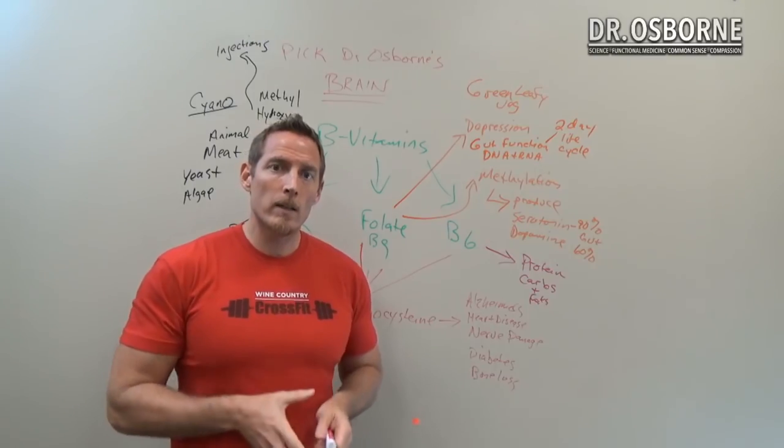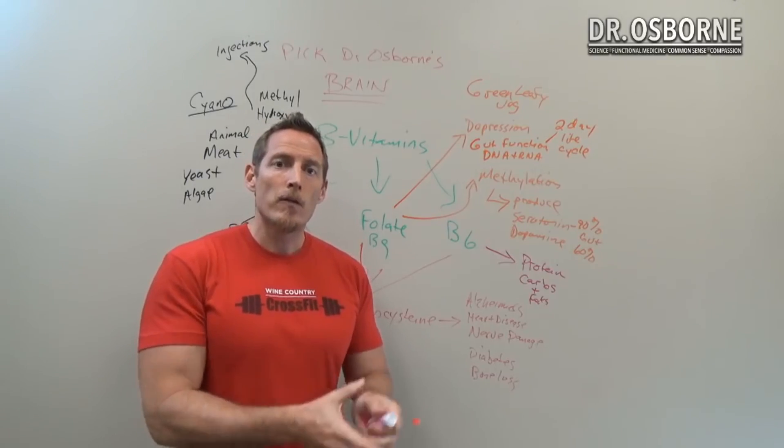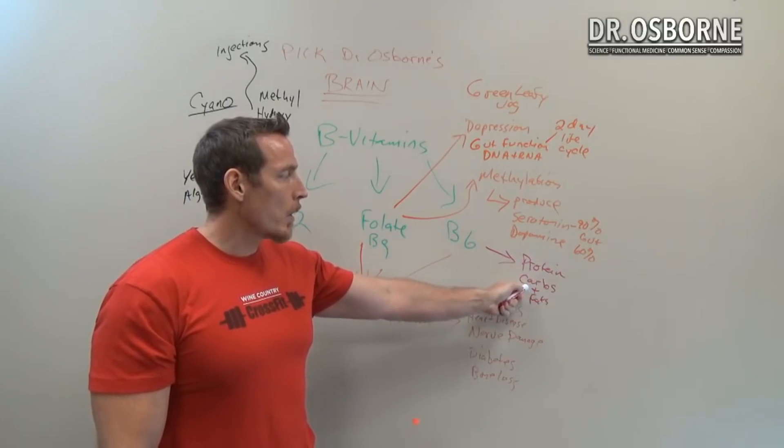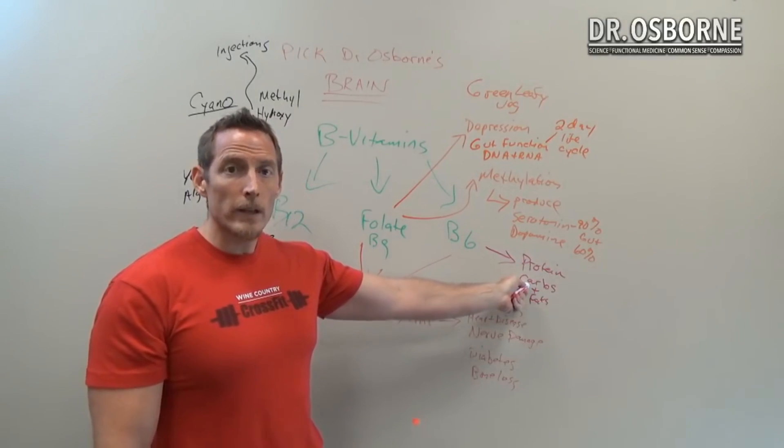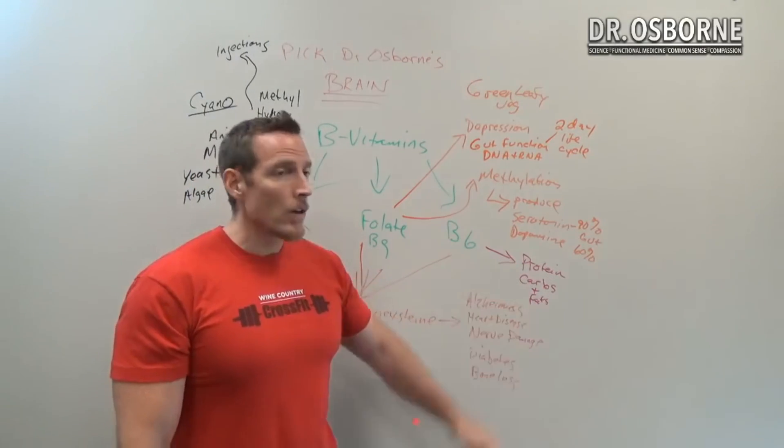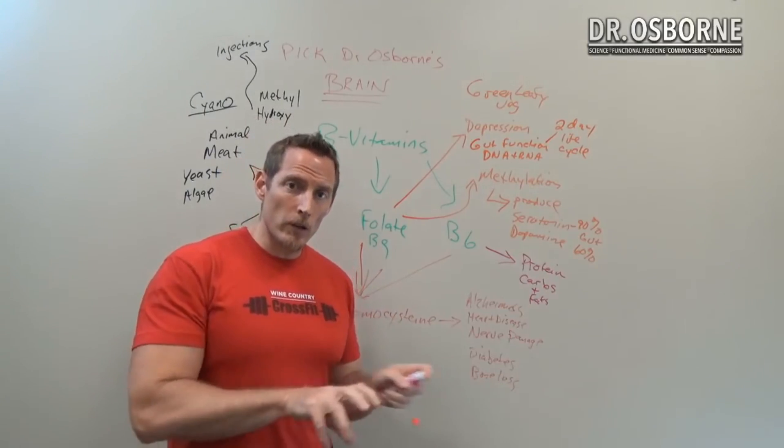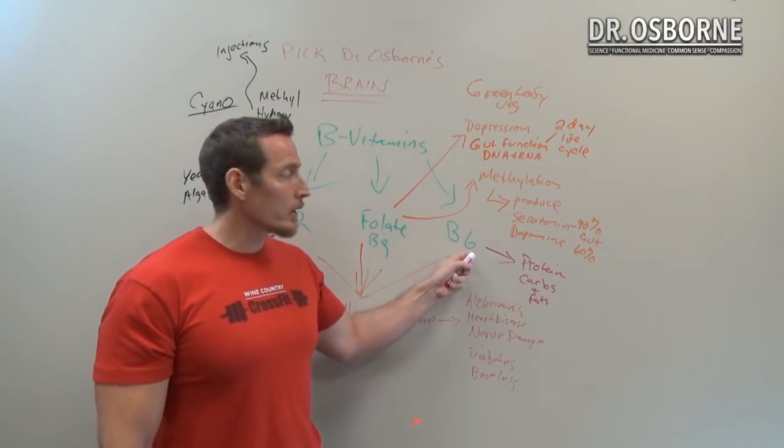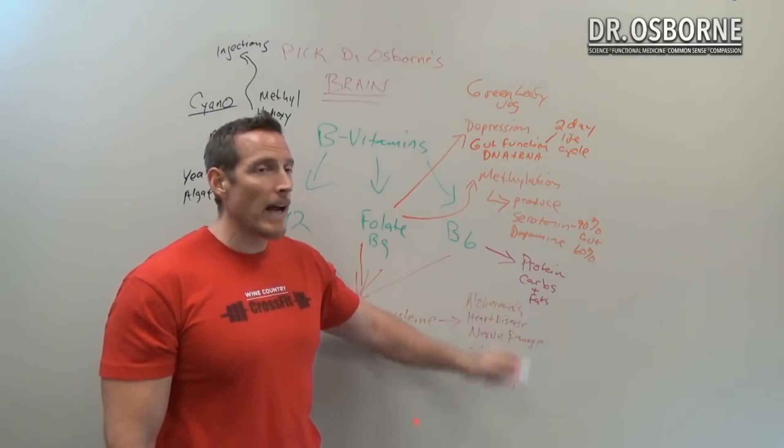So we eat those foods, they're broken down into our GI tract, and then we absorb them into our bloodstream. From our bloodstream, the smaller protein amino acids, the smaller carb molecules like glucose, and the fats—the different types of fats—get shuttled inside of our cells. It's inside the cell where vitamin B6 actually works to help your body break them down and convert them into energy.